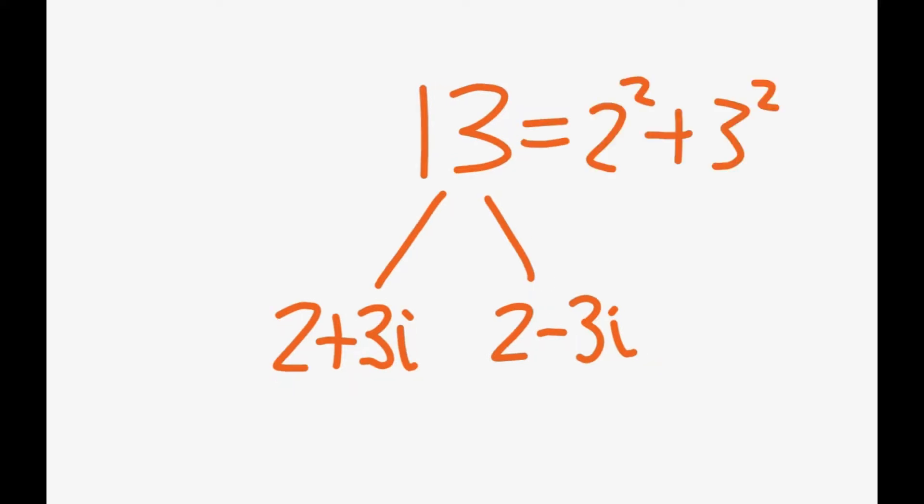Let's look at the prime 13. We cannot factor it in the integers, but we can factor it in the Gaussian integers. We say that we can factor it as 2 plus 3i times 2 minus 3i, because 13 is the sum of squares. Now, is 2 plus 3i or 2 minus 3i factorable? To do this, we need to take a look at the norm.